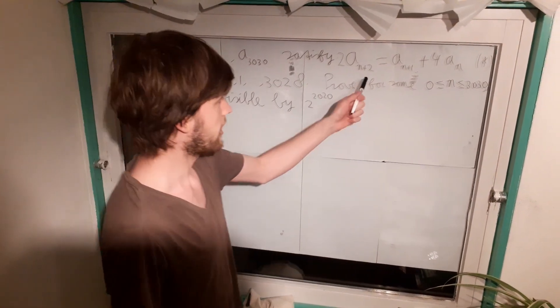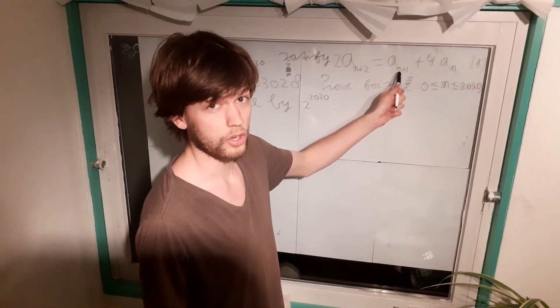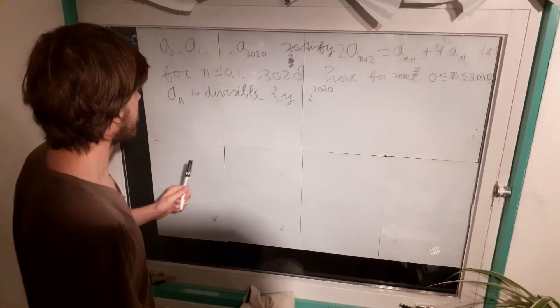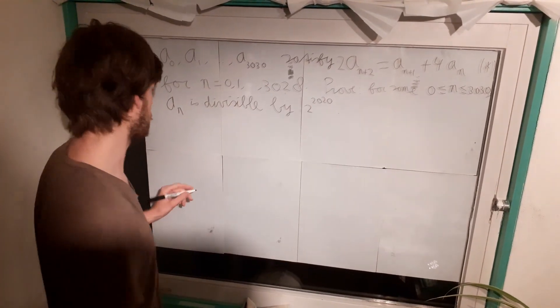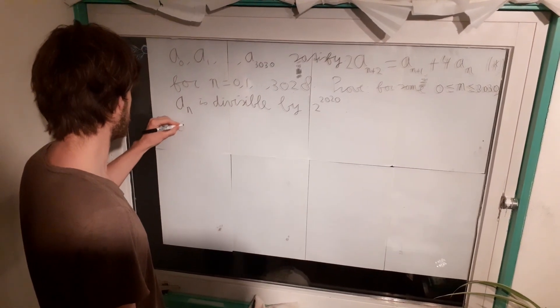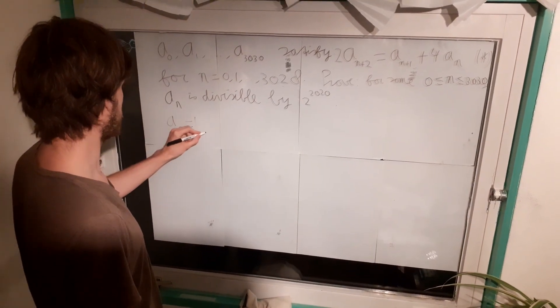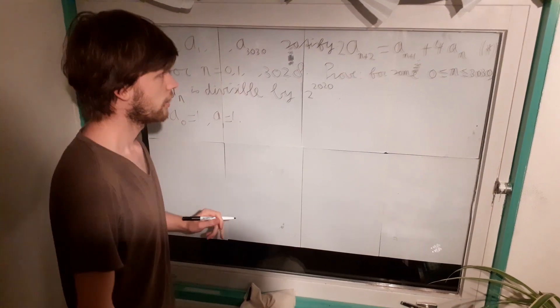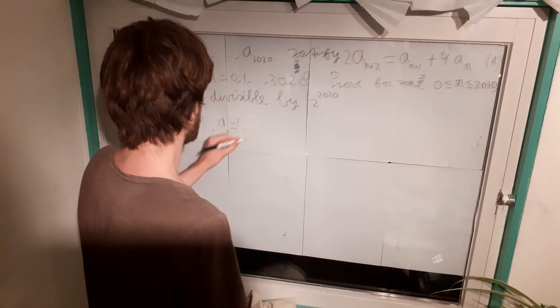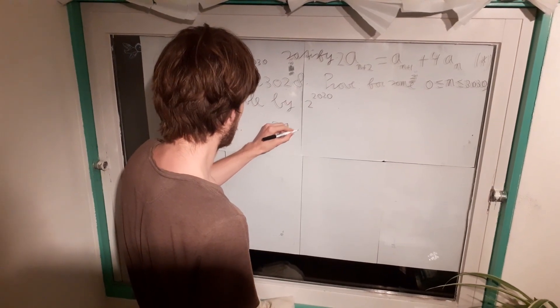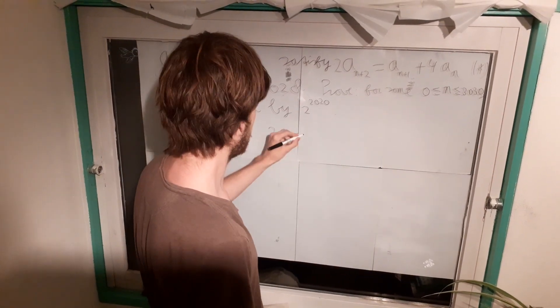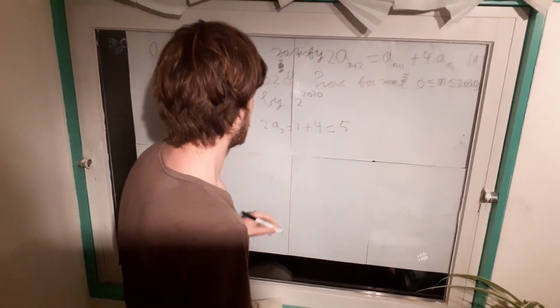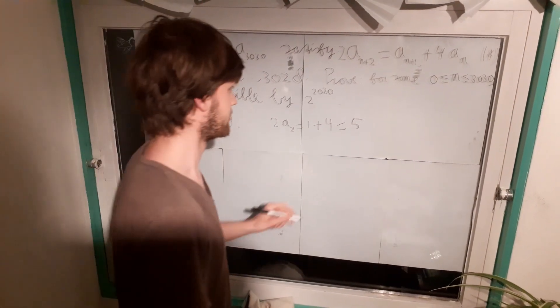So we are just going to start by plugging in some small numbers. We know from this formula that if a0 and a1 are known, then we can calculate a2 and then a3, etc. Since the a_i are supposed to be positive integers, we are just going to start by the simplest example: a0 is 1 and a1 is 1. We will see what happens. So, plugging in n equals 0 will give 2a_2 equals 1 plus 4 is 5. So now we already get a contradiction.